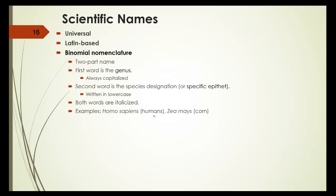Scientific names are universal, Latin-based, and binomial nomenclature. Binomial means it has a two-part name. The first word is the genus, and it's always capitalized. While the second word is the species designation, or the specific epithet. And that's written in lower case. Both words are italicized.